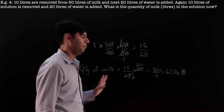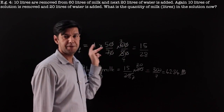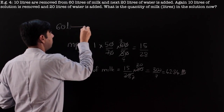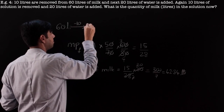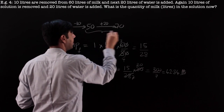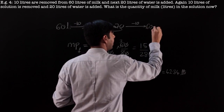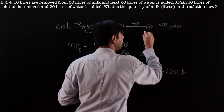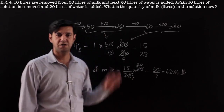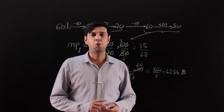The quantity of milk is (15/28) × 80 = 300/7 liters. Since 1/7 ≈ 14.28, then 3/7 ≈ 42.28, so approximately 42.28 liters of milk remain. For your benefit, writing the volumes: started 60 → remove 10 → 50 → add 20 → 70 (first addition factor 50/70) → remove 10 → 60 → add 20 → 80 (second addition factor 60/80). Try to avoid writing these volumes unless numbers become hard to track.